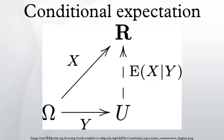Classical definition — conditional expectation with respect to an event: In classical probability theory, the conditional expectation of X given an event H is the average of X over all outcomes in H. The sum above can be grouped by different values to get a sum over the range of X. In modern probability theory, when H is an event with strictly positive probability, it is possible to give a similar formula. This is notably the case for a discrete random variable Y, where the event H is {Y = y}.